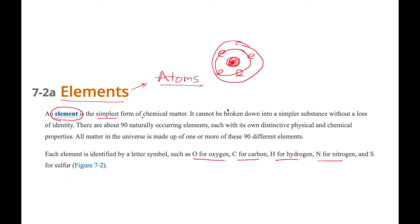An element is the simplest form of chemical matter, and an atom is a unit of matter. An element cannot be broken into simpler substances without the loss of identity. For example, gold cannot be converted to iron without it losing its identity — that's basically what it means. There is an identity of the atom, or the type of atom, that the element defines. All matter in the universe is made up of one or more of these 90 different elements.